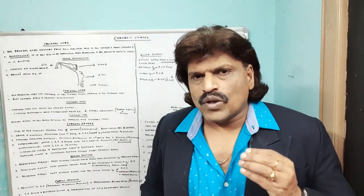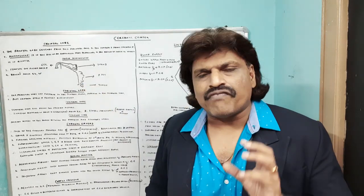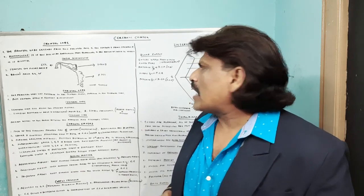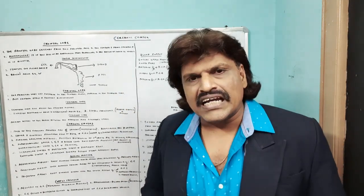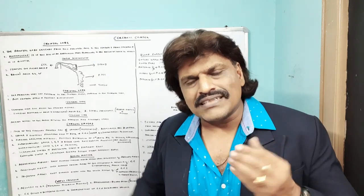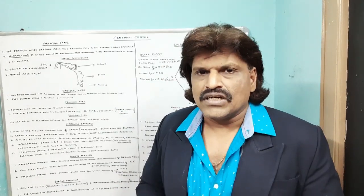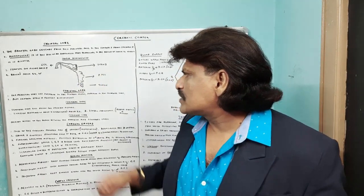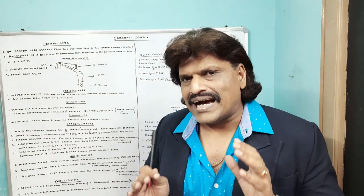We need to know what the homunculus is. The homunculus is the size of an anatomical part proportional to the amount of cortex to which it is related — it is the representation of body parts in the cortex. We have a motor homunculus in the frontal lobe and a sensory homunculus in the parietal lobe. They are similar but not exactly identical.